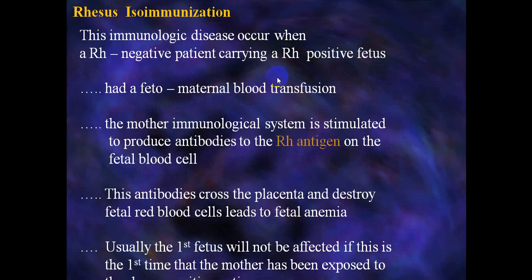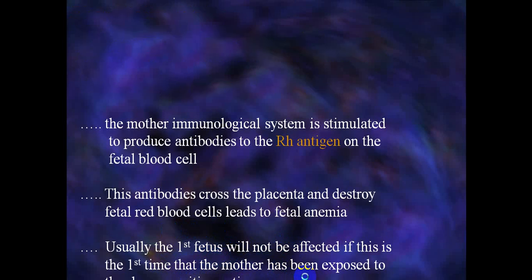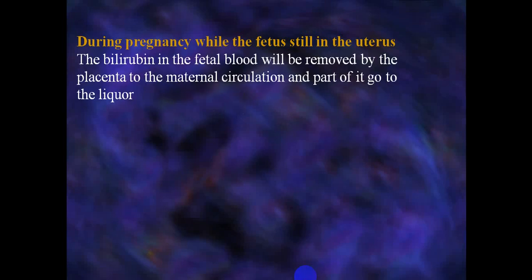In RH isoimmunization, fetal-maternal blood transfusion stimulates the mother's immunological system to produce antibodies to the RH antigen on the fetal red blood cells. These antibodies cross the placenta and destroy the fetal RBCs, leading to fetal anemia. Usually the first fetus will not be affected if this is the first time the mother has been exposed to RH-positive blood group from the fetus.